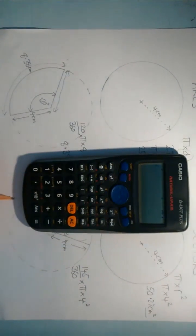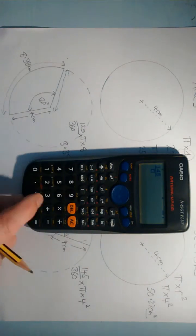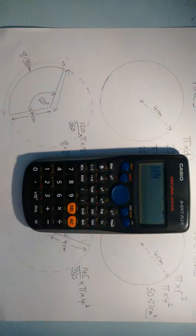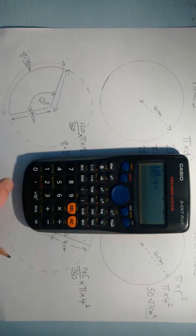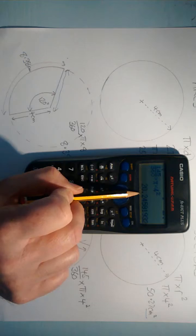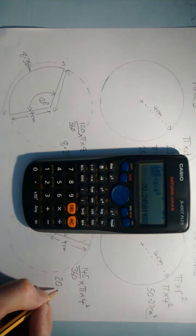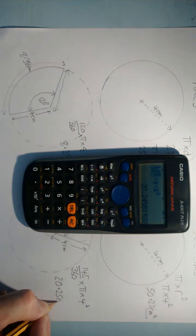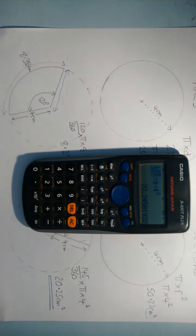Which I can do again as a calculation. So 145 over 360 times pi times 4 squared gives us an answer of 58 over 9 pi. That's the accurate answer. To two decimal places, 20.25 centimeters squared rounded to two decimal places.